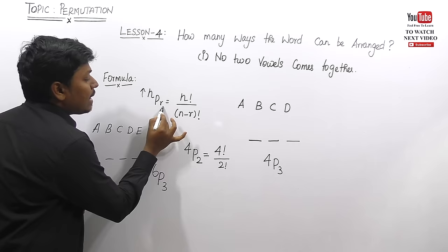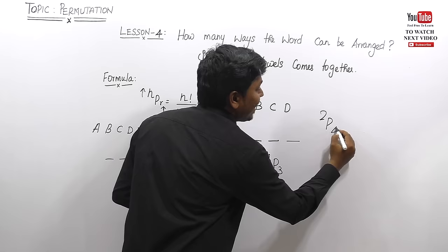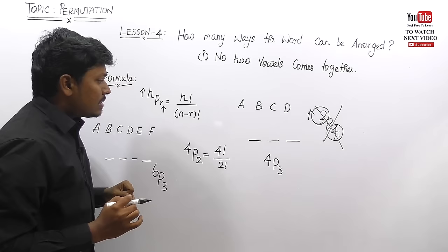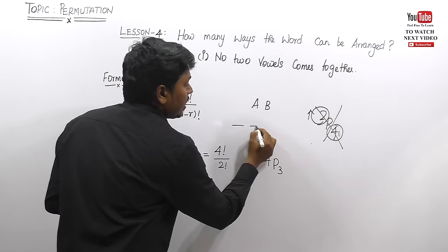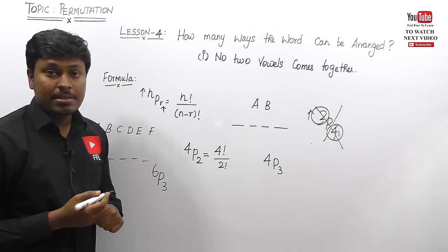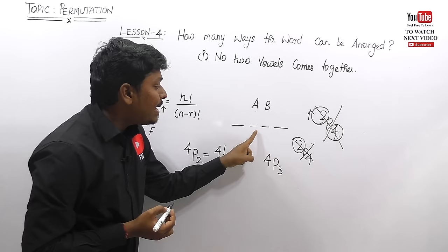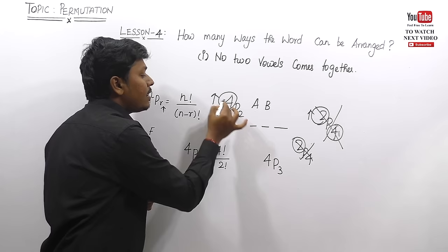An important rule: the value of n must always be greater than the value of r. You should never write 2P4 — that is wrong. In the numerator we have 2, but in the denominator we would have 4. The numerator value must always be greater than the denominator. Think of it this way: we have only 2 letters but 4 places, so the numerator cannot be less than the denominator.